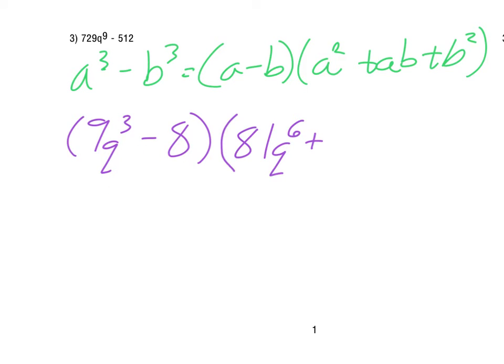To get the next term, I just take the product of these two, so 72q³. And then to get the final term, I take and square the second term here. So squaring the 8 gives us 64. And so that is how that one will factor.